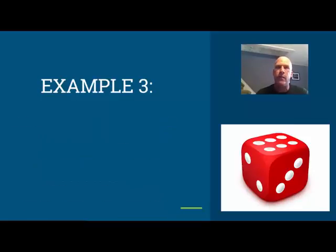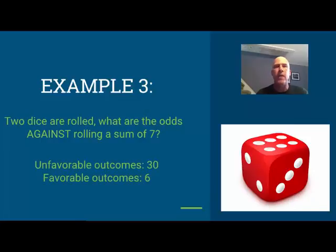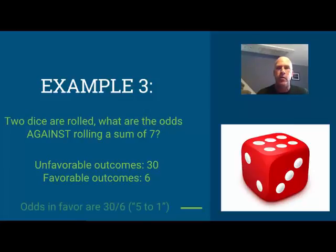One die isn't really all that interesting — let's do something tougher. Example three: if I roll two dice, what are the odds against rolling a sum of seven? When rolling two dice there are 36 different outcomes. Six of them give a sum of seven, and 30 do not. Since odds against compare unfavorable to favorable, the odds against rolling a sum of seven are 30 to six, which reduces to five to one.